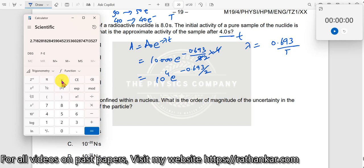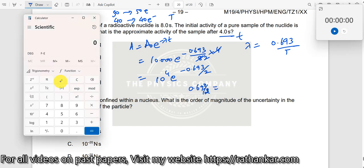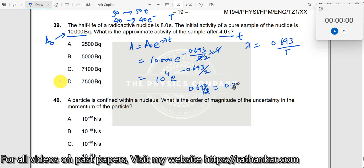Let me write it down. 0.693 divided by 2 should be equal to, how much is it? 0.693 divided by 2 should be 0.346.